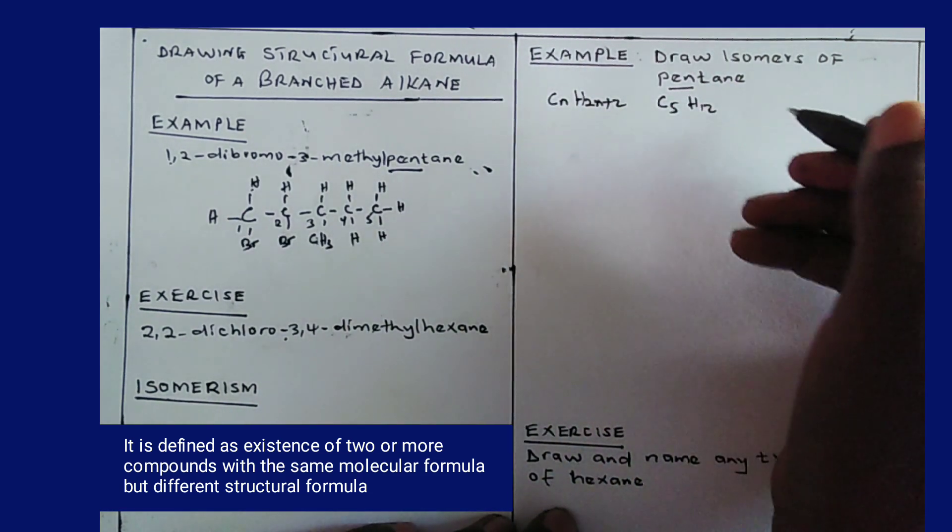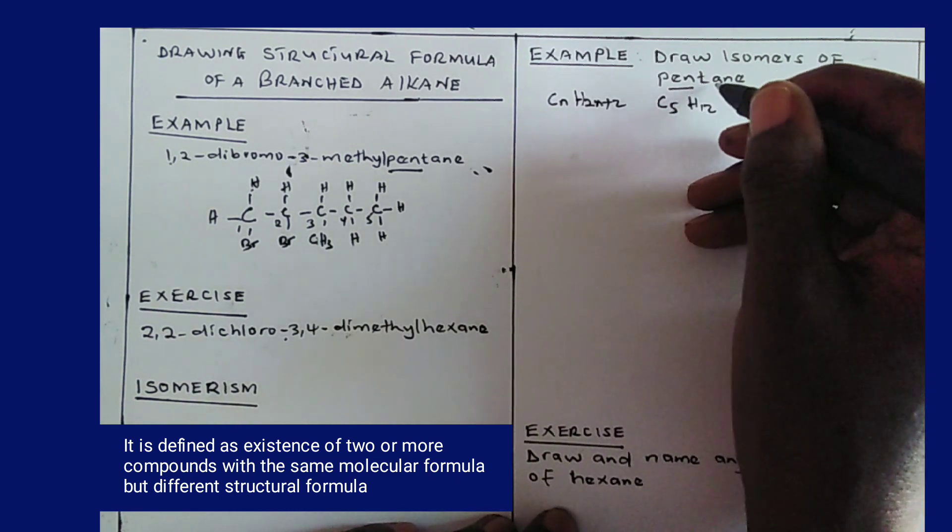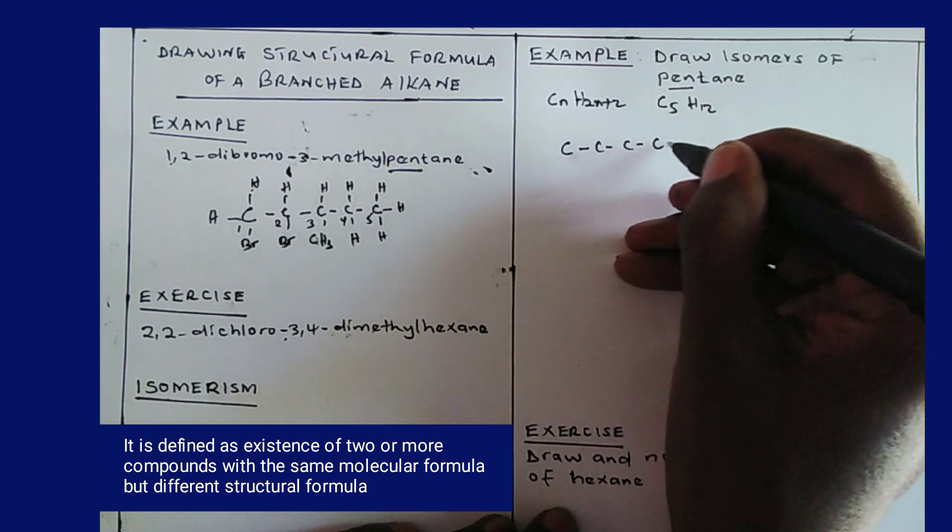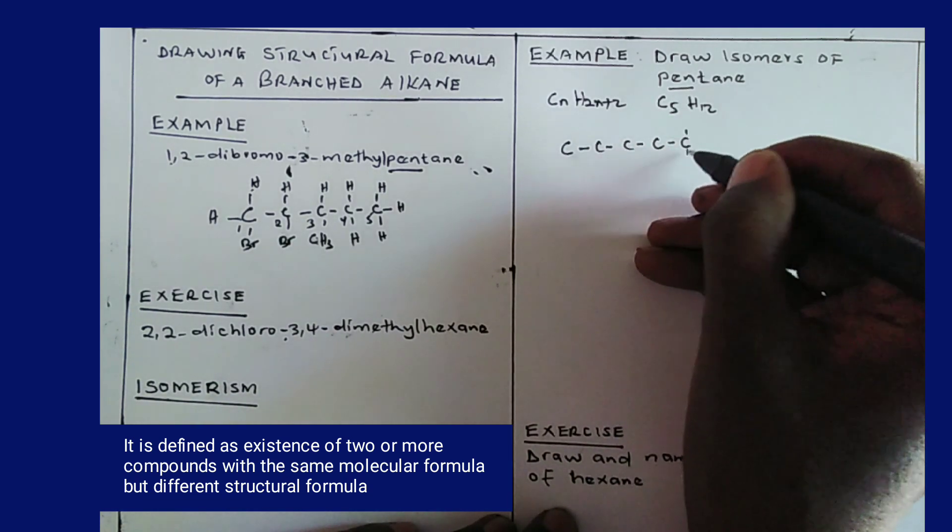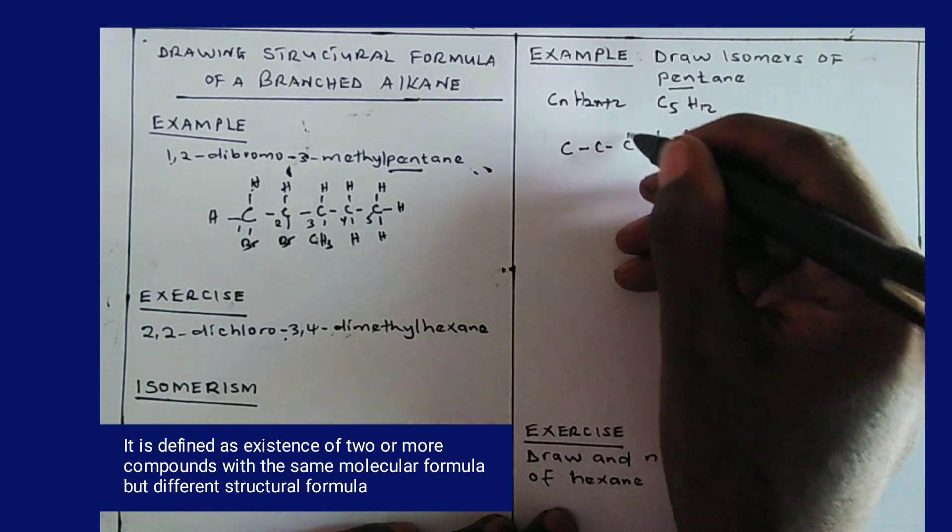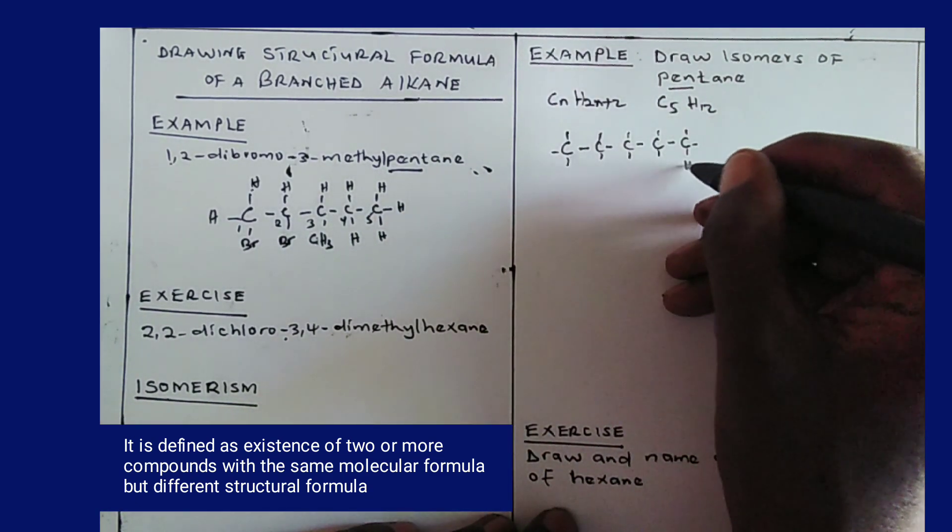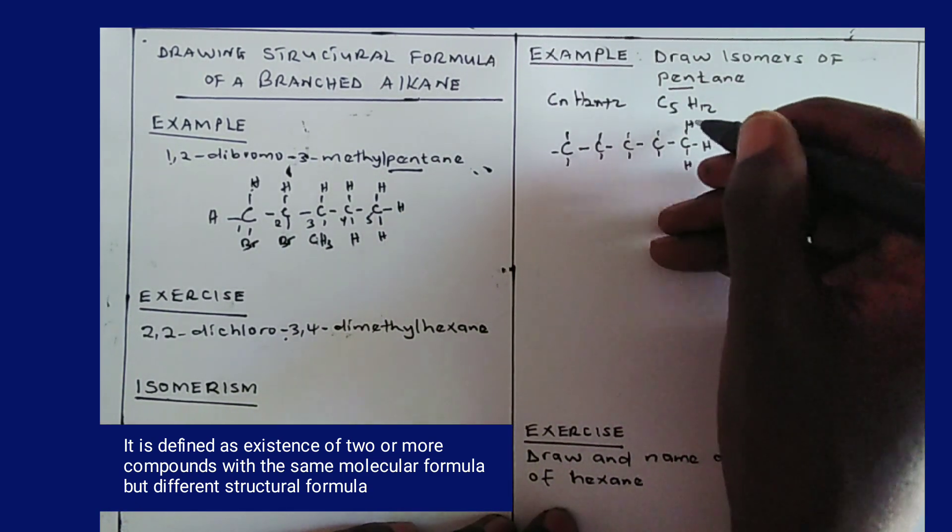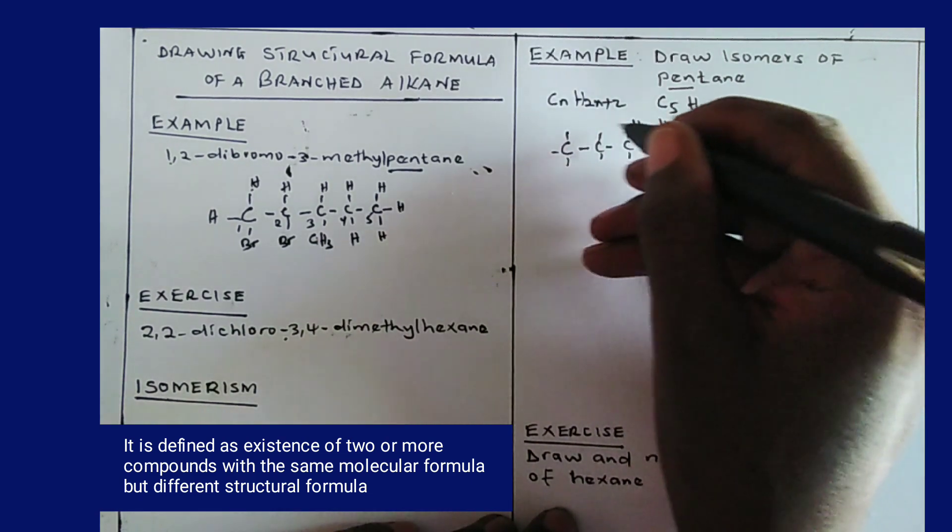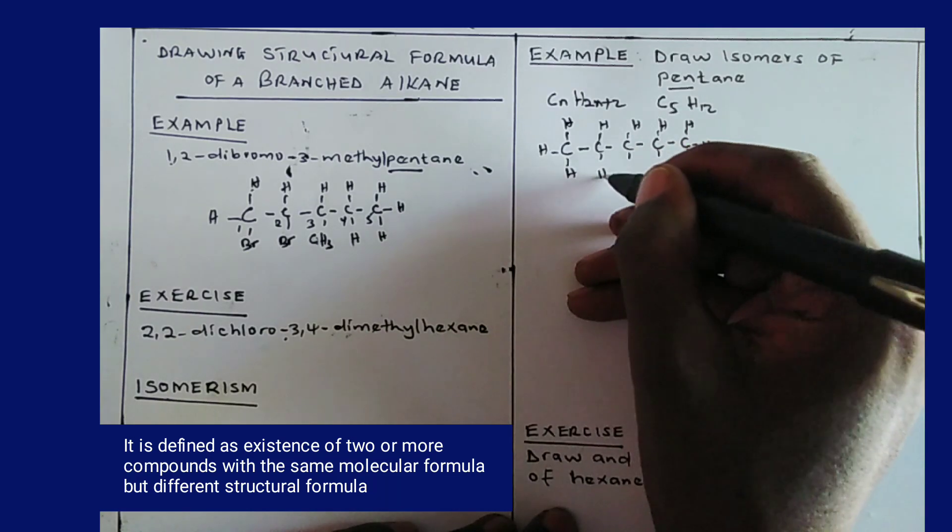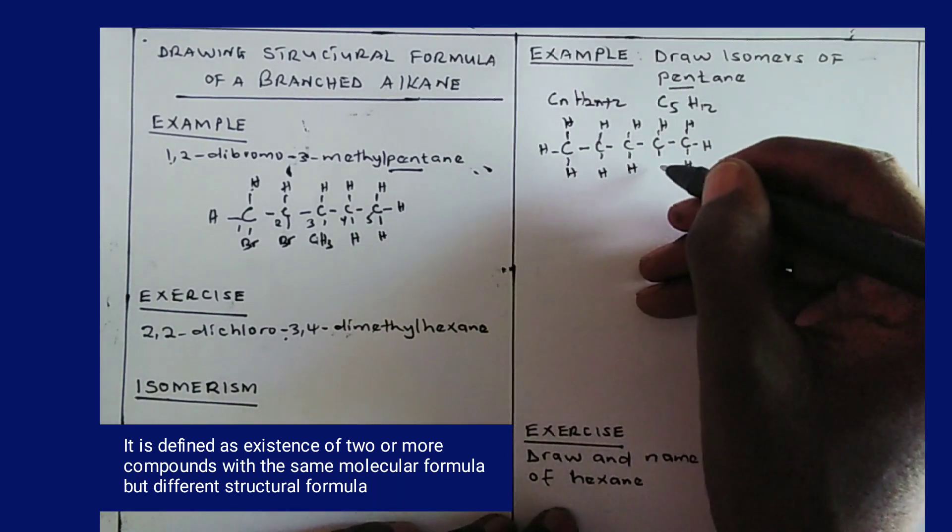Now to draw the isomers, start with the normal structure of pentane. 5 carbon atoms joined by single bonds, then place each of them to have 4 bonds, then place hydrogen in each of the bonds created. So that's the first isomer.